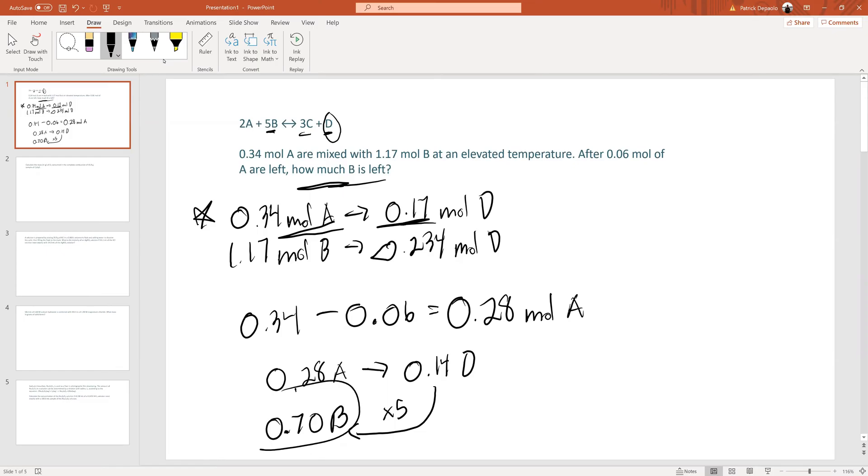This is not our answer. This is the amount of B that was reacted. The question is asking for how much is left. So just like we did for A, we'd have to subtract the amount reacted with the amount that we started with to figure out how much is left. 1.17 of B minus 0.7 of B equals 0.47. So you'd have 0.47 moles of B remaining after this reaction occurs.